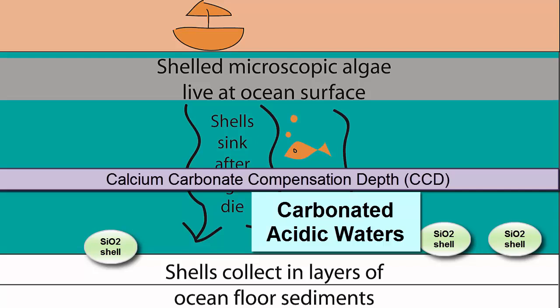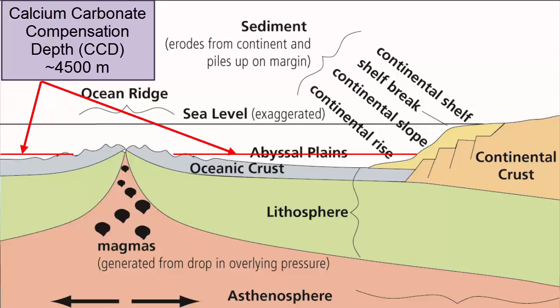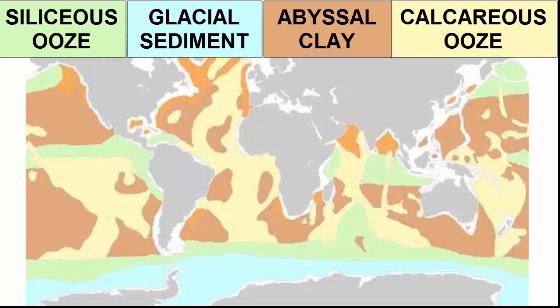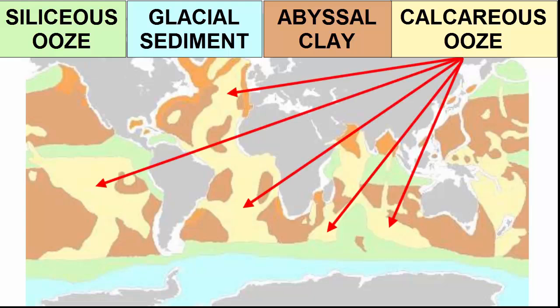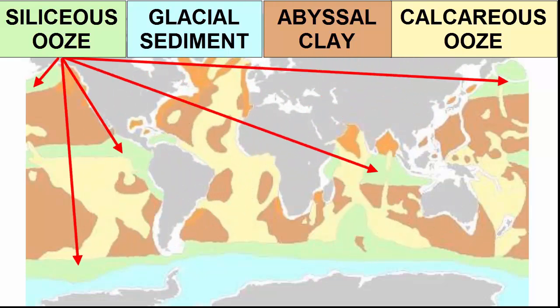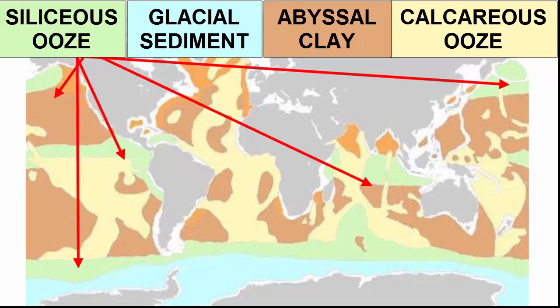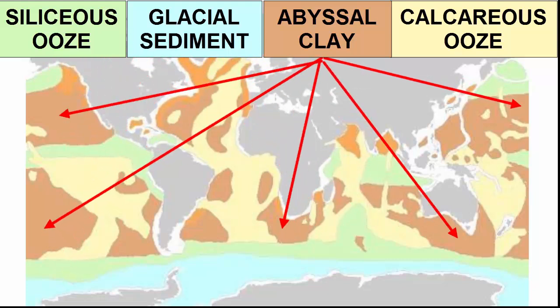For our purposes, calcareous shells should be absent below the CCD. This depth varies in the oceans but is on average around 4,500 meters, meaning the deep abyssal plains will not have calcareous shells accumulating. Only siliceous oozes or abyssal clays can collect at these depths. The calcareous oozes correspond to mid-ocean ridges — the shallowest parts of the oceanic zone. Siliceous oozes dominate at the eastern equatorial zones and in polar regions as previously discussed. The rest of the ocean is dominated by abyssal clays.